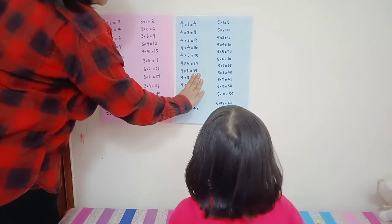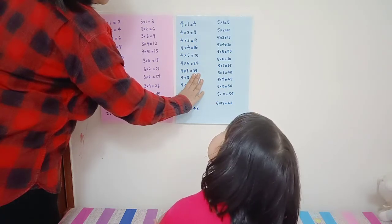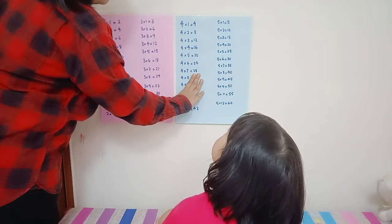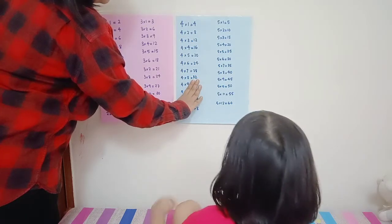eight. Four times eight... twenty-three? Oh, thirty-two. Four times nine...